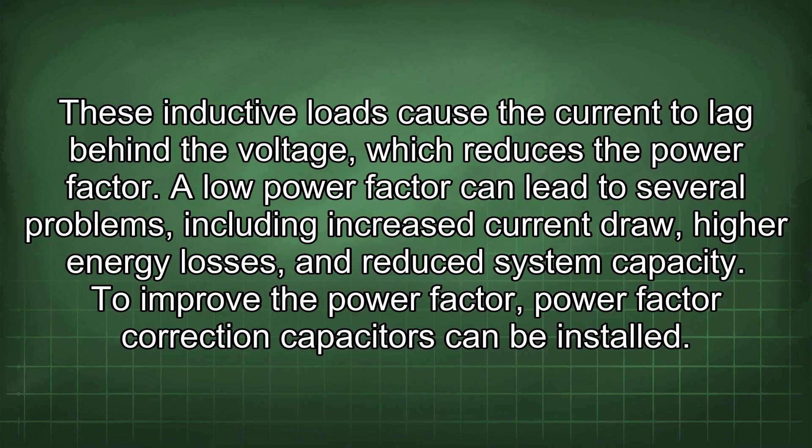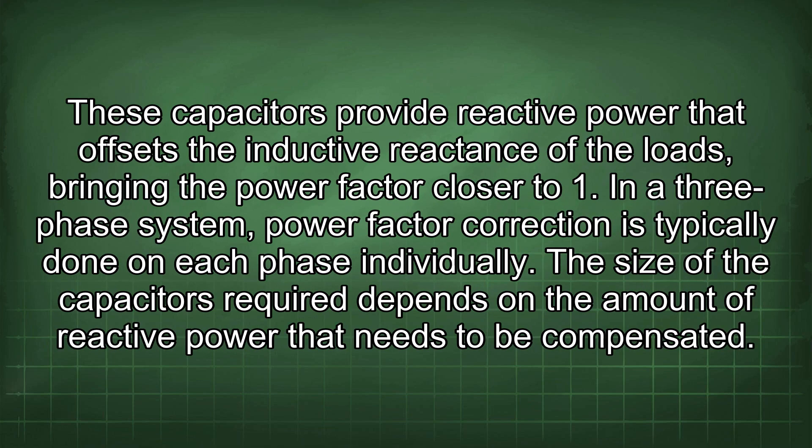A low power factor can lead to several problems, including increased current draw, higher energy losses, and reduced system capacity. To improve the power factor, power factor correction capacitors can be installed. These capacitors provide reactive power that offsets the inductive reactance of the loads, bringing the power factor closer to one. In a three-phase system, power factor correction is typically done on each phase individually, and the size of the capacitors required depends on the amount of reactive power that needs to be compensated.